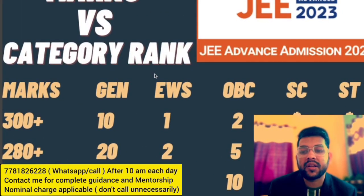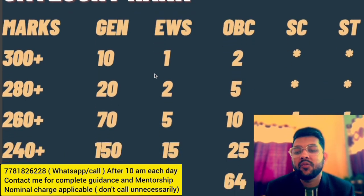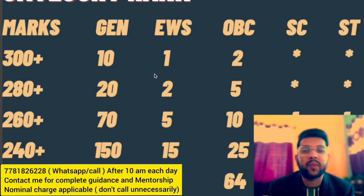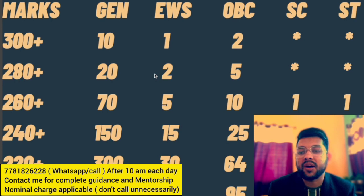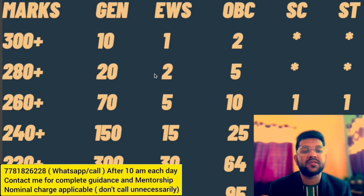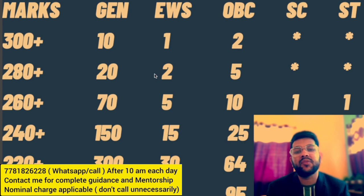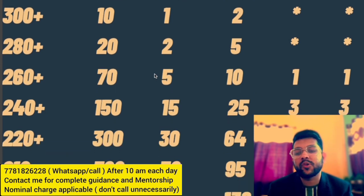If you are getting 300 plus, then surely you are getting under 100 rank. For EWS, rank 1 is also possible. For OBC, you can get under rank 2. For 280 plus: General rank 22, EWS rank 2, OBC rank 5. For 260 plus marks: General rank 75, EWS rank 10, OBC and SC data available. For 240 plus: General 150, EWS 15, OBC 25, SC 3, ST 3 respectively for all categories.